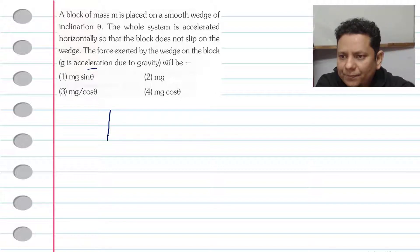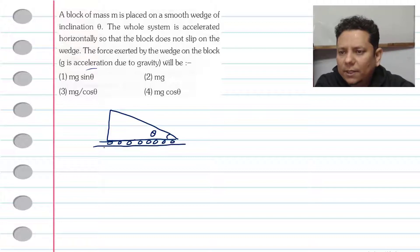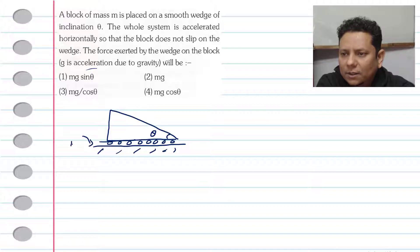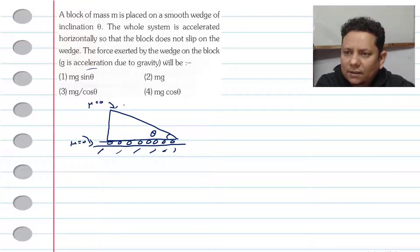Now let's understand this question. We have an inclined plane with angle theta. The friction mu is equal to zero — the surface is smooth with friction value equal to zero. There is a small block placed on this inclined plane.